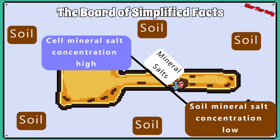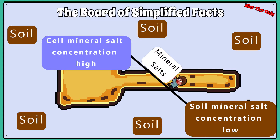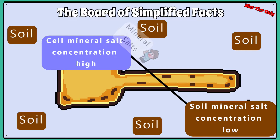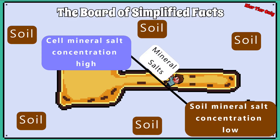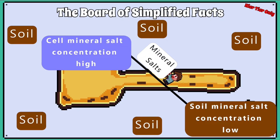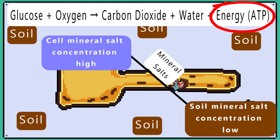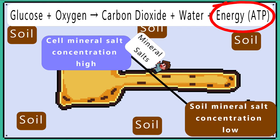Active transport moves mineral salts from the soil, where they are in a region of low concentration, into the root hair cell, where the mineral salts are in a region of high concentration. This requires energy because it is against the concentration gradient, hence why the root hair cells have lots of mitochondria, which are aerobically respiring to provide the ATP to drive active transport.